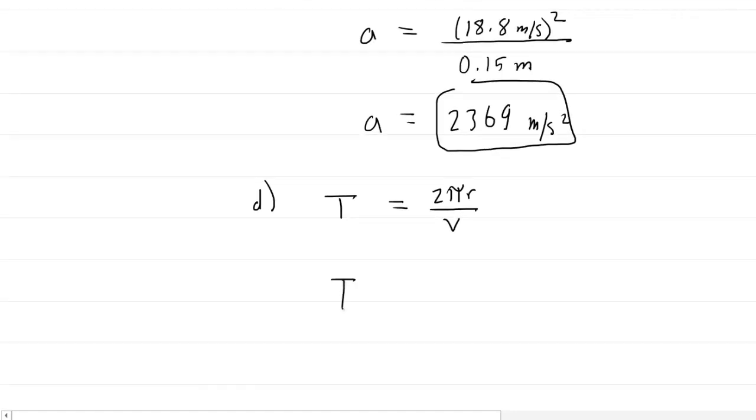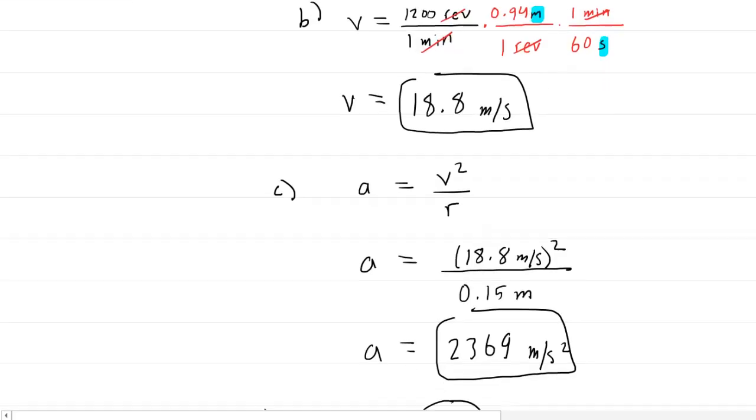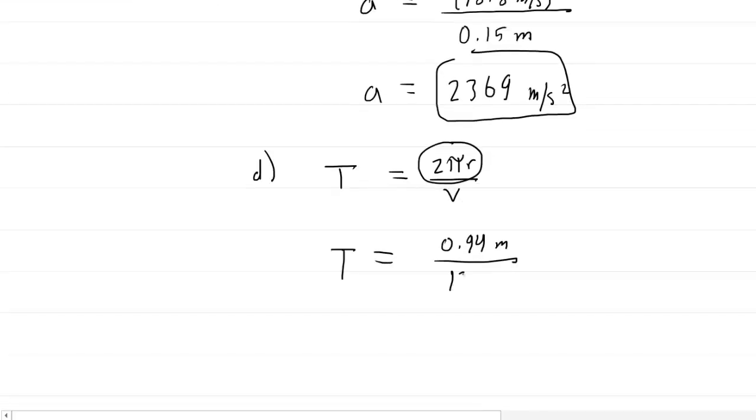Remember, in part A, we figured out the circumference, and that was the 0.94 meters. And then we divide this by the speed that we obtained in part B, which was the 18.8 meters per second.